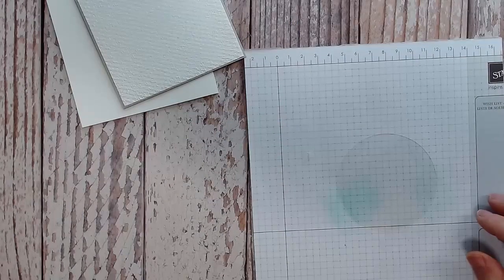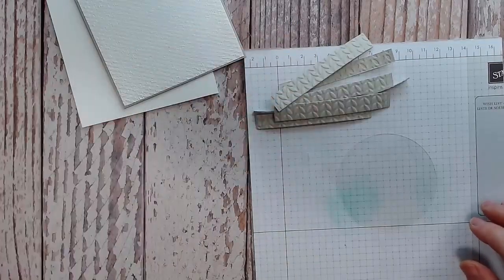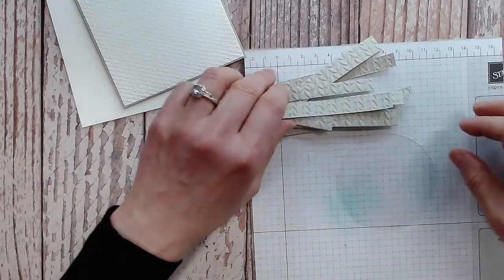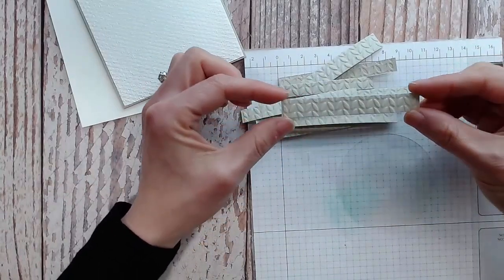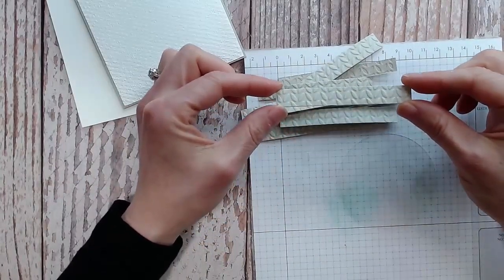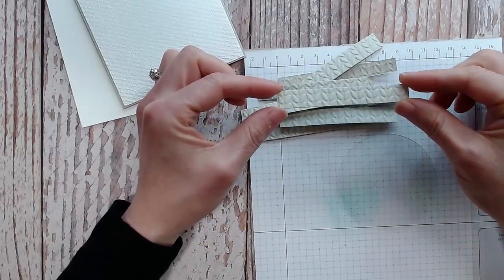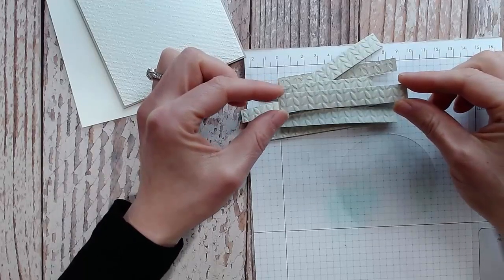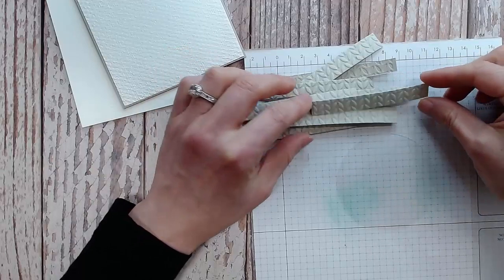For the sample that I showed you, I used strips of different colors of paper. On this one I'm just going to use Sahara Sand, but I've actually already embossed it and then I cut the strips after I embossed it.